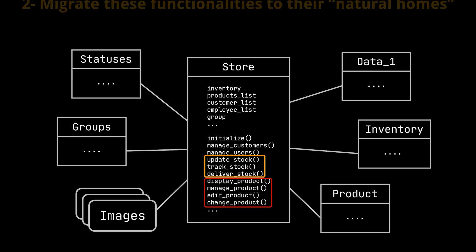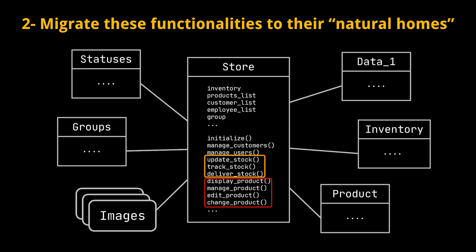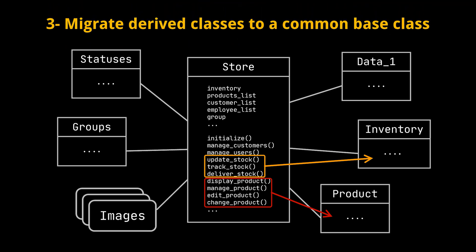The second step is to look for natural homes for this contract-based collection of functionalities and then migrate them there. In this example, we gather operations related to inventory and migrate them from the Store Class to the Inventory Class. We do the same with operations and attributes related to products, and so on. This simplifies the Store Class and elevates other classes beyond simple encapsulated data tables, resulting in a better object-oriented design.